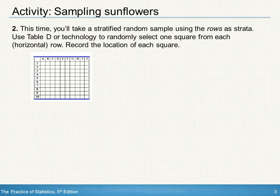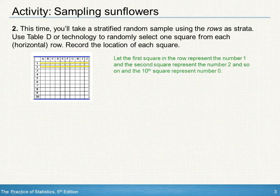Step 2: sample 10 squares from a stratified random sample using the rows as strata. Use table D, or technology, to randomly select one square from each horizontal row. Record the location of the squares.